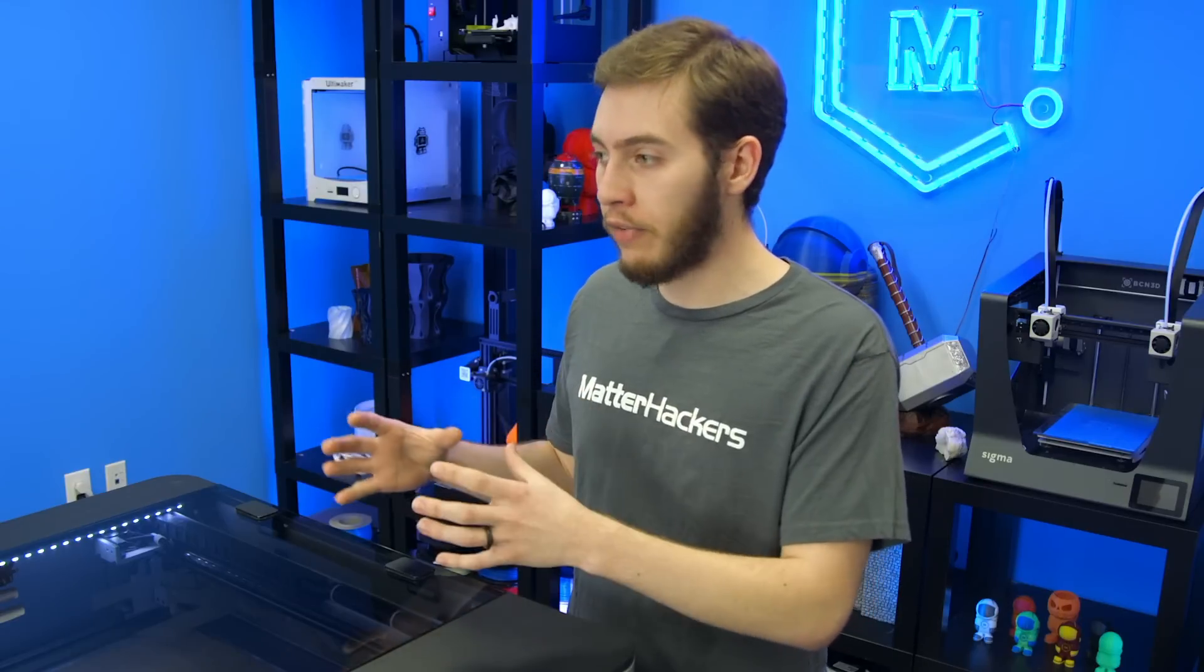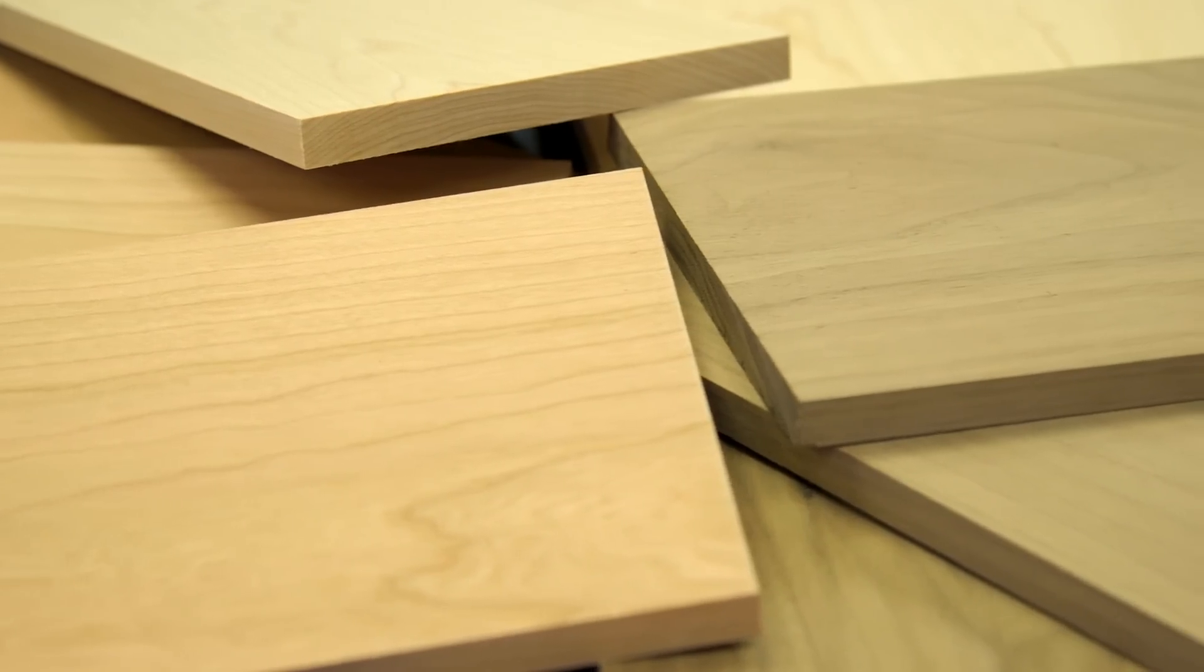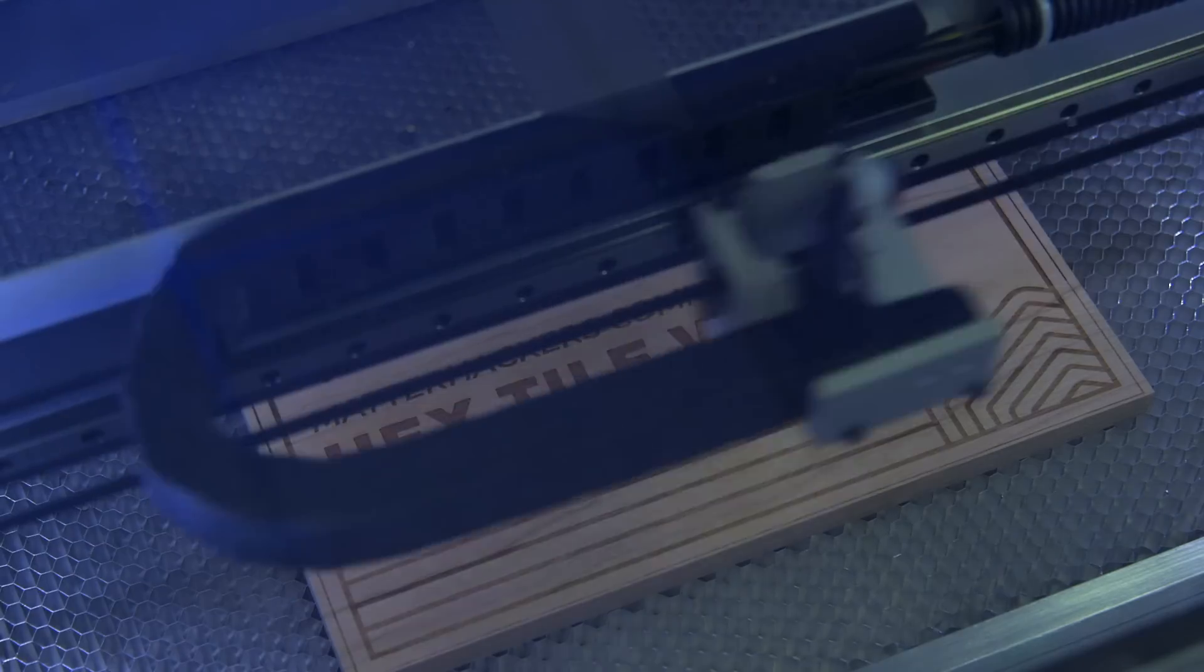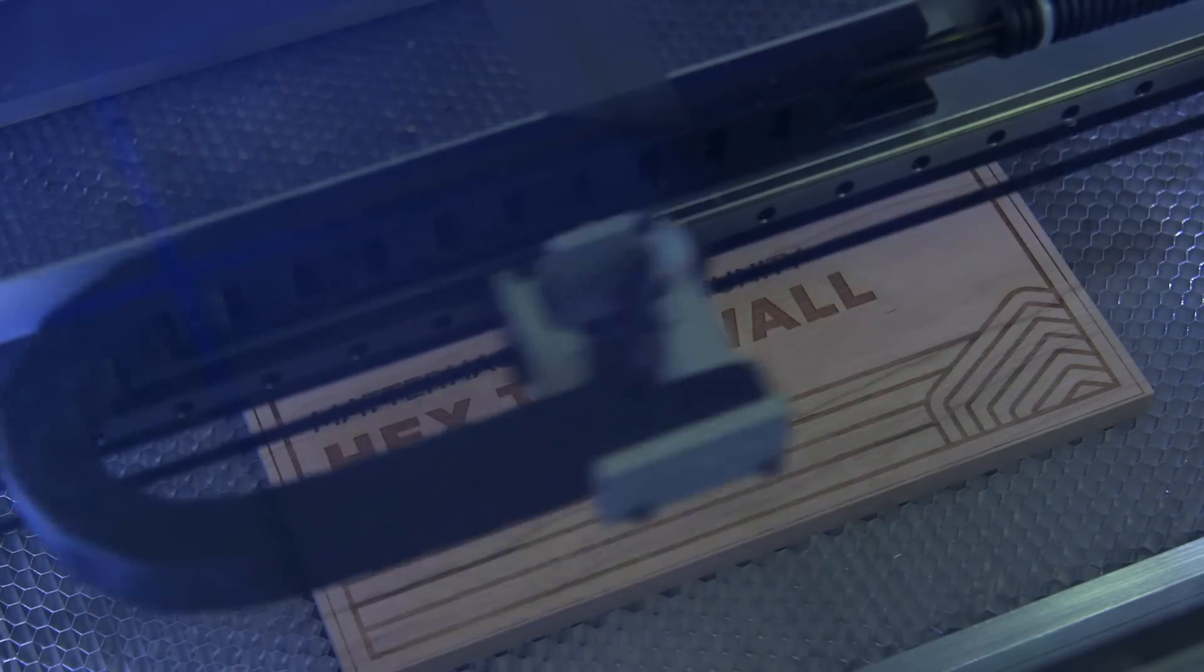The second project is going to be engraving on some of the MatterHackers project wood, which is a really high quality wood that'll look really nice once you've engraved it into a custom sign.